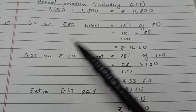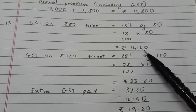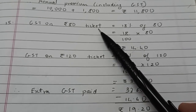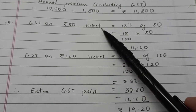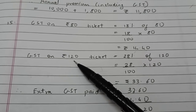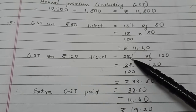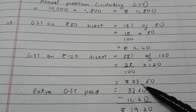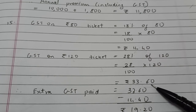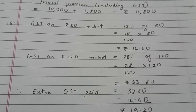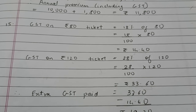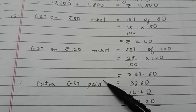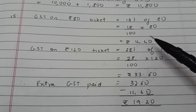The GST on the ₹80 ticket at 18% comes to ₹14.40, so the total would have been ₹94.40. But he purchased the ₹120 ticket on which 28% GST applies, coming to ₹33.60, so he spent ₹153.60 in total. The extra GST paid is ₹33.60 minus ₹14.40, which equals ₹19.20.